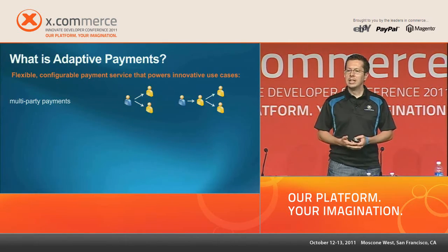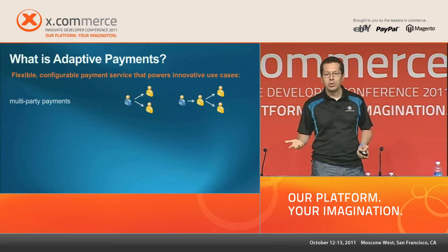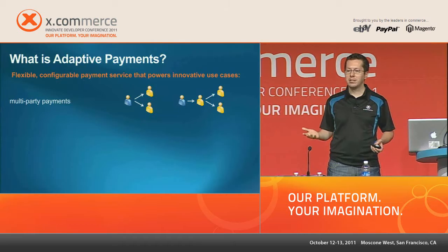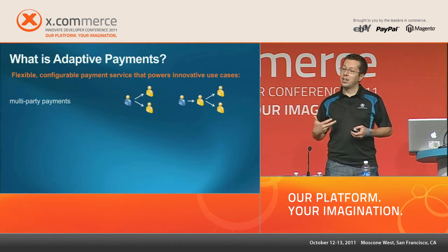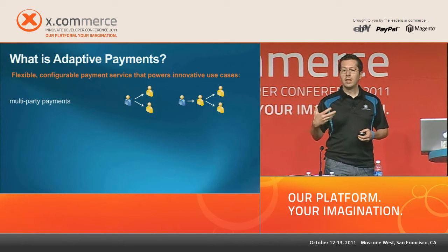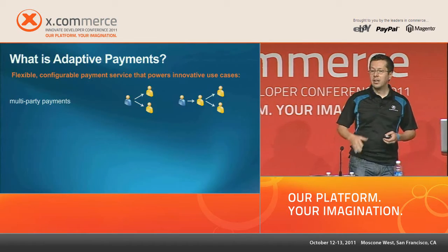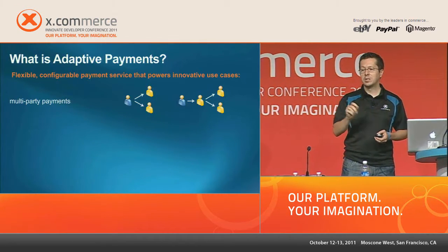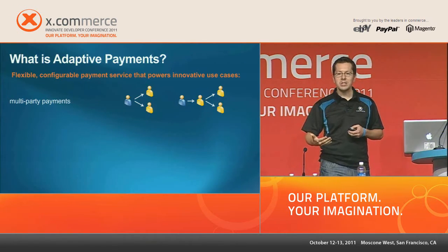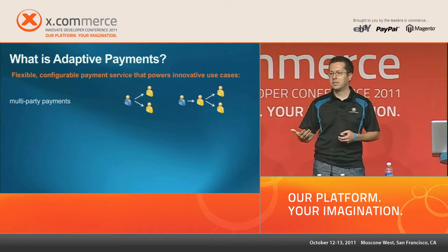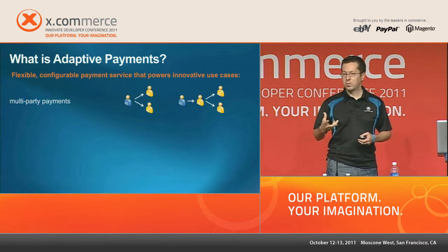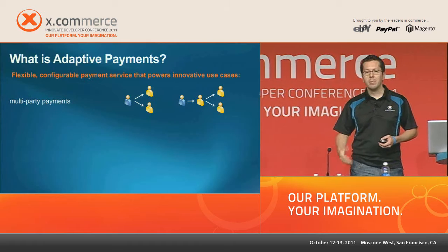A multi-party payment is pretty simple — it's a payment that has more than one recipient. Suppose you run a marketplace and match up buyers and sellers. In exchange for the value you bring, you want to take a cut of the transaction. With Adaptive Payments, using a chain payment, you can have the very transaction in which the buyer pays the seller also include a direct cut for you. You're not in the business of billing the seller separately.